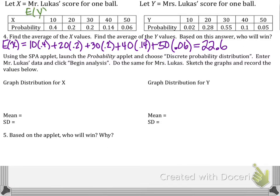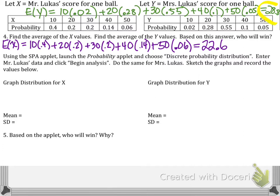Then if you look at Mrs. Lucas' score, we'll repeat this process. She has a 2% chance of scoring a 10. So we'll multiply 10 times 2%. And then 20 will get multiplied by 0.28, 28%. So on and so forth until we've multiplied each outcome times its probability to get 28.8 points. So in this case, it looks like Mrs. Lucas may actually have the advantage. Maybe Mrs. Lucas will do better, even though Mr. Lucas does have a tendency to score a little bit higher some of the time.